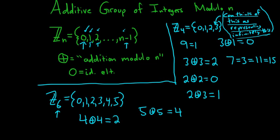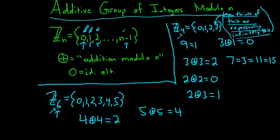I'll stop the video here. This group is called the additive group of integers modulo n — usually n is given as 4, 6, or some other specific number — and it comes up a lot in the theory of groups. The elements are the unique remainders guaranteed by the division algorithm. When you divide a number by 6, for example, the possible remainders are 0, 1, 2, 3, 4, and 5. It's the group of remainders.